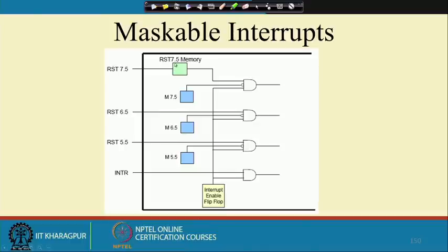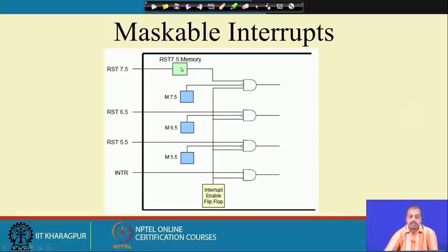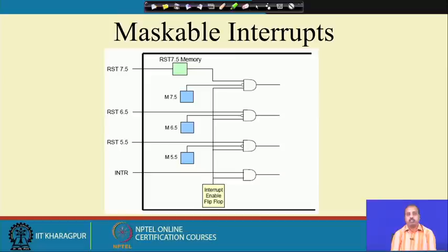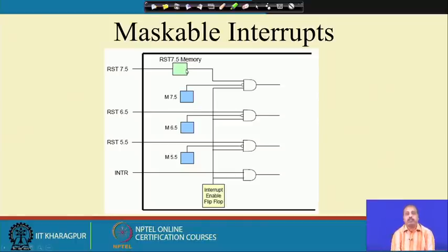RST 7.5 has another flip-flop. For interrupts 6.5 and 5.5, the interrupt line must be active for 1.5 T-states to be sensed. For 7.5, since there is a flip-flop, if the interrupt occurs the value gets latched, so when the processor checks at the end of those clock cycles it will find the flip-flop set to 1. This means the RST 7.5 interrupt can be of much shorter duration than the 6.5, 5.5, and INTR pins.